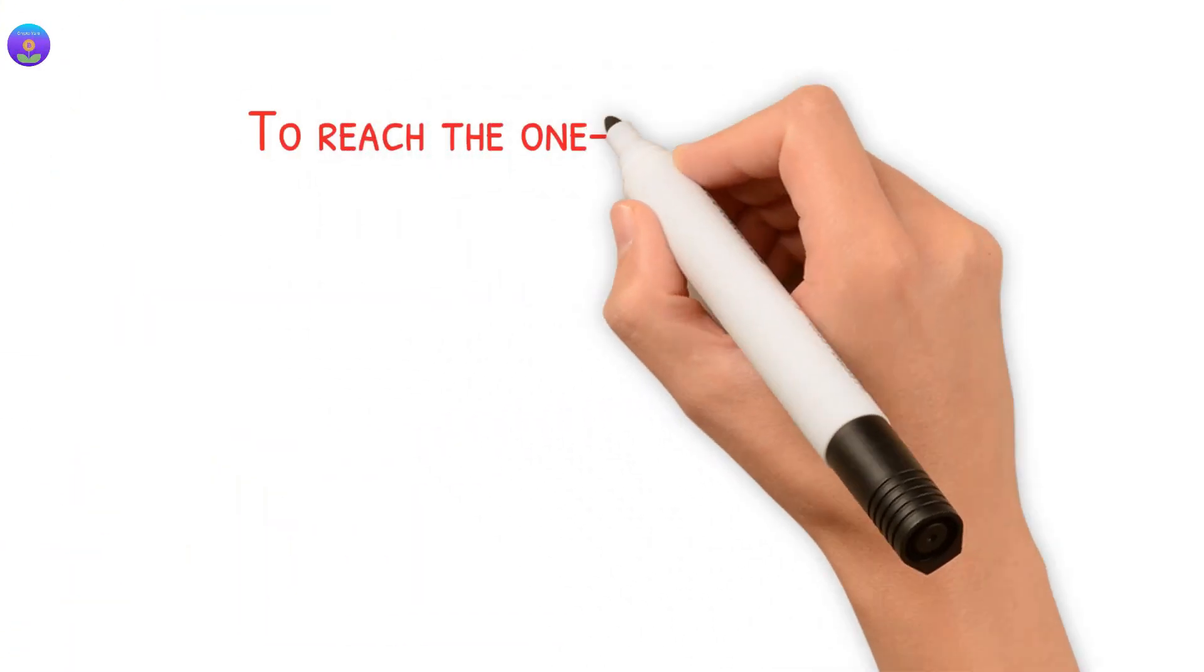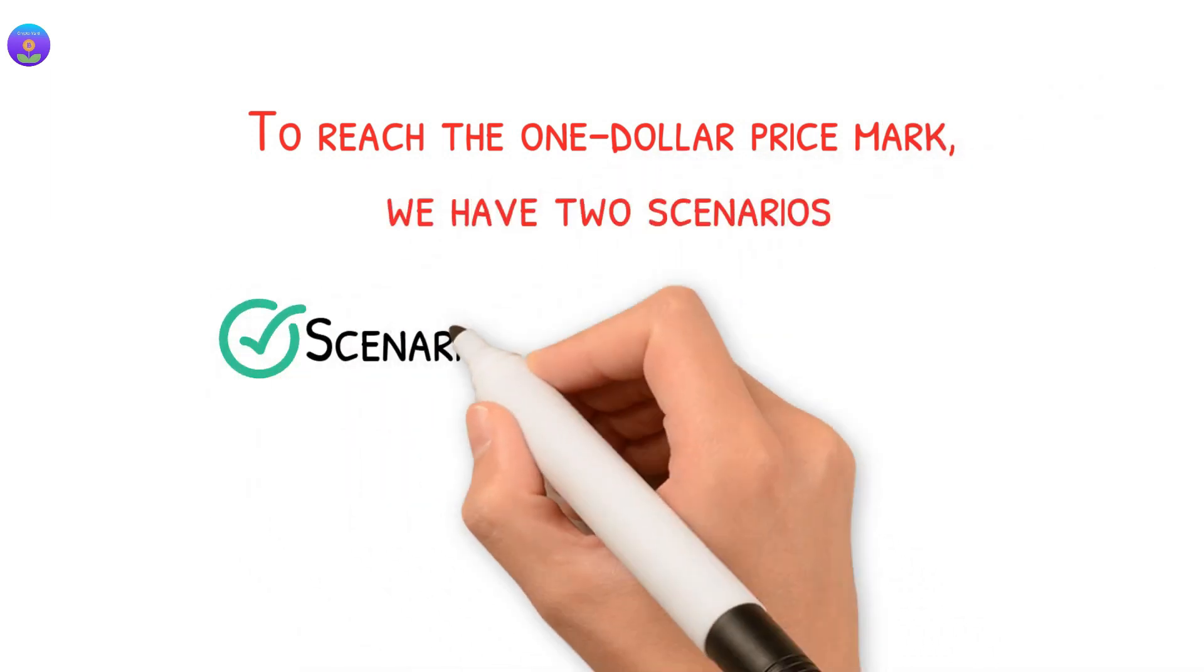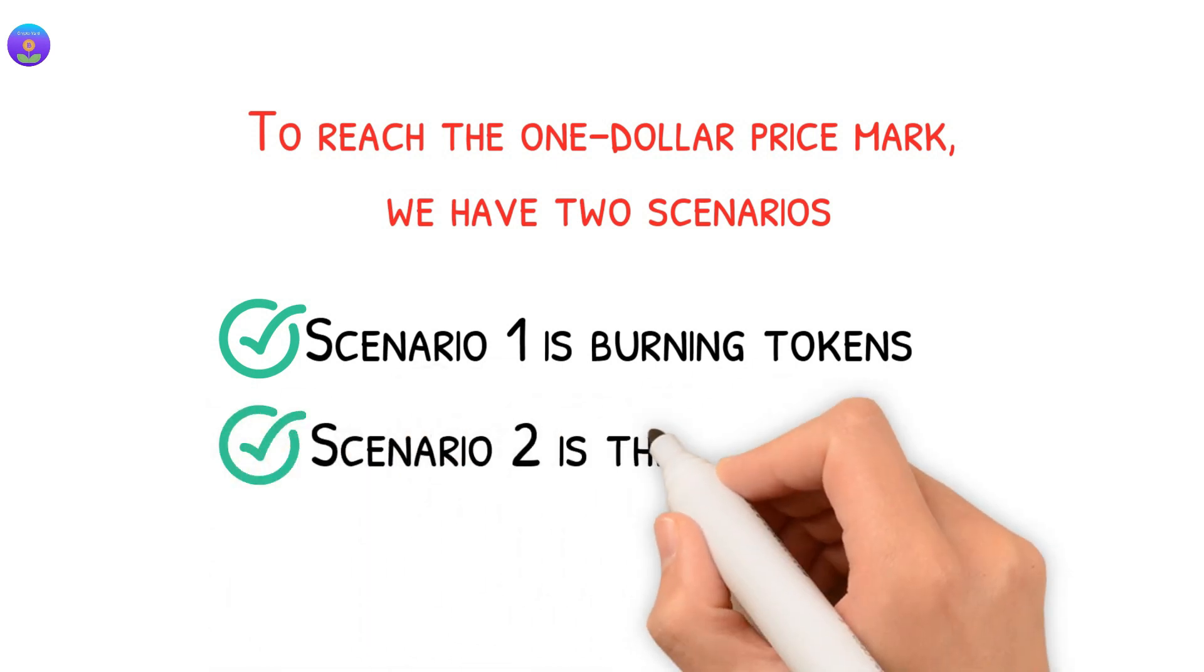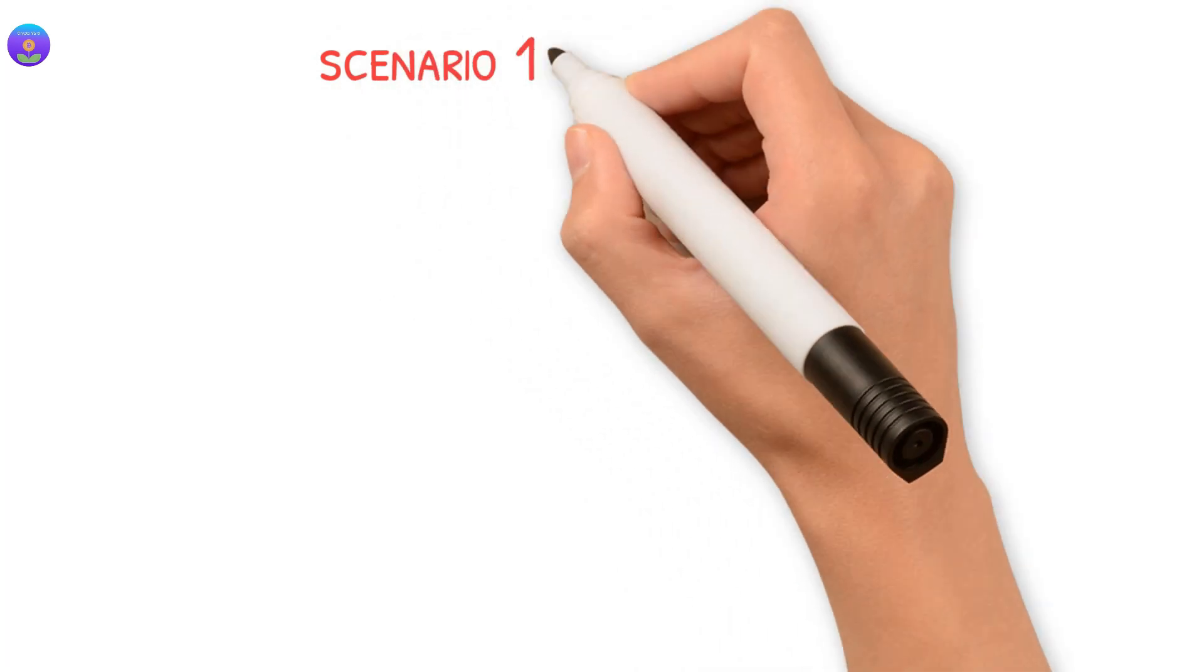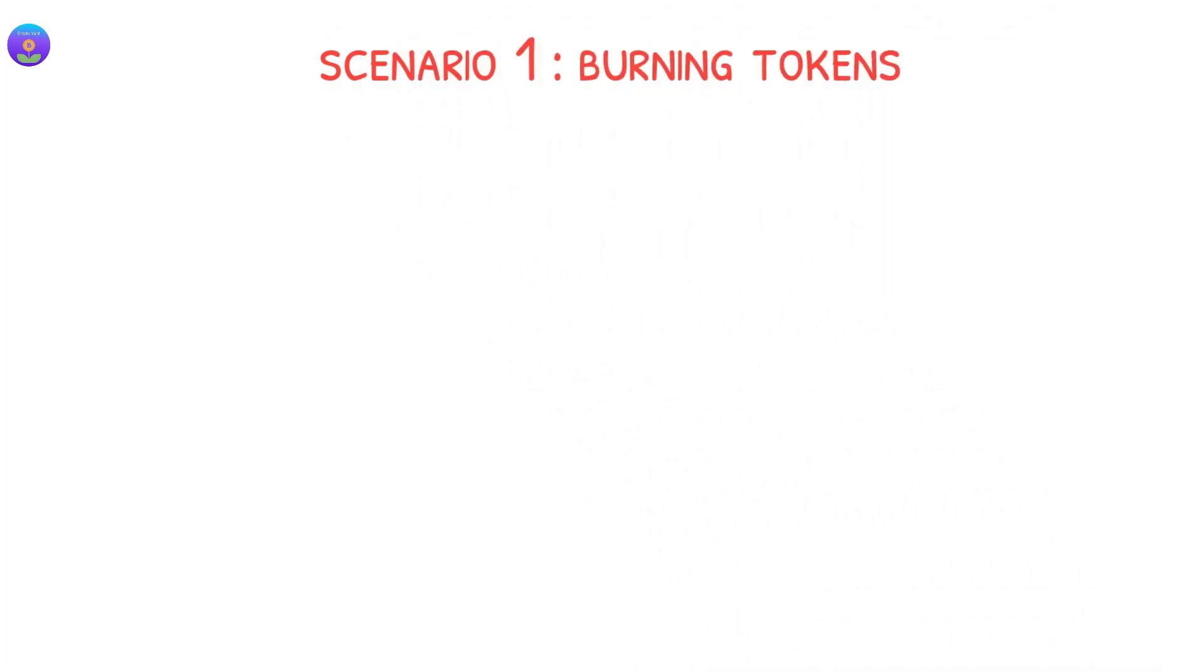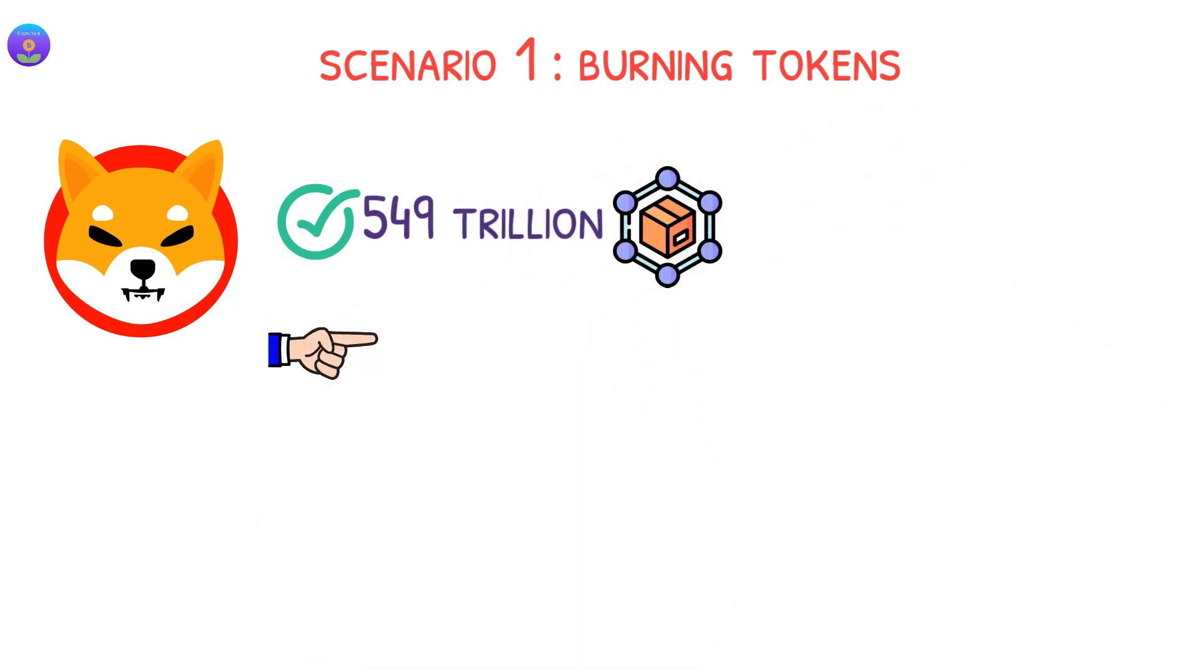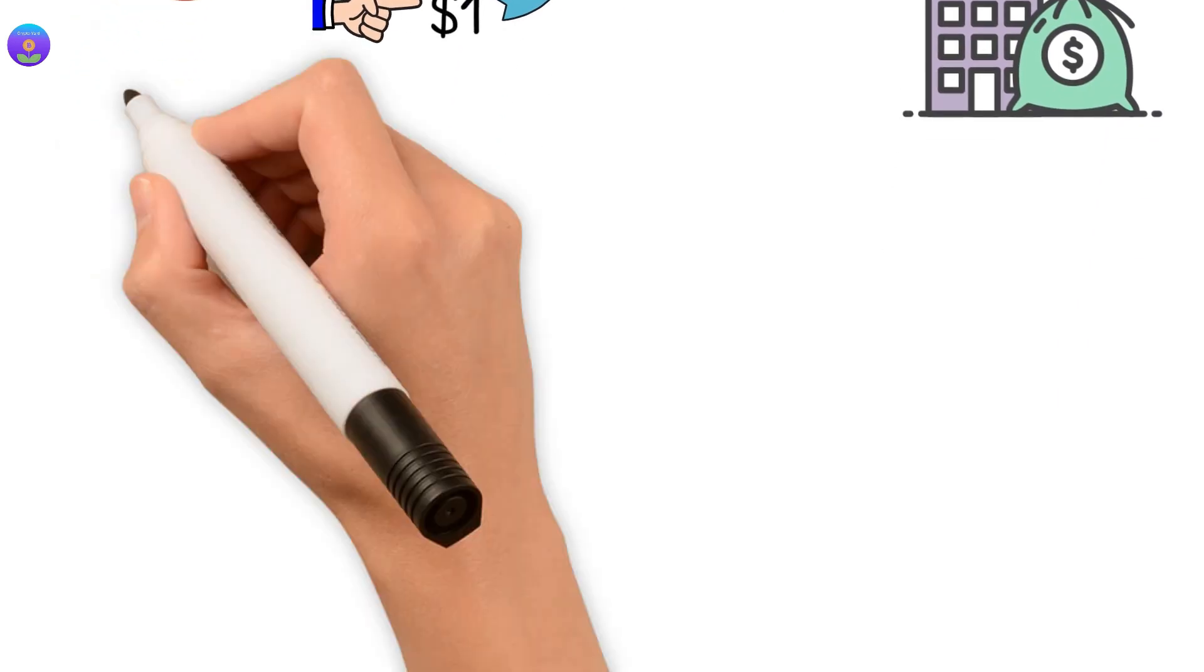To reach the $1 price mark, we have two scenarios. Scenario number one is burning tokens. Scenario number two is the reverse split. If we go to scenario number one, which is burning tokens, Shiba now has 549 trillion in the circulating supply. If we want Shiba to reach $1 with that supply, this will give us a 549 trillion market cap, which is impossible.